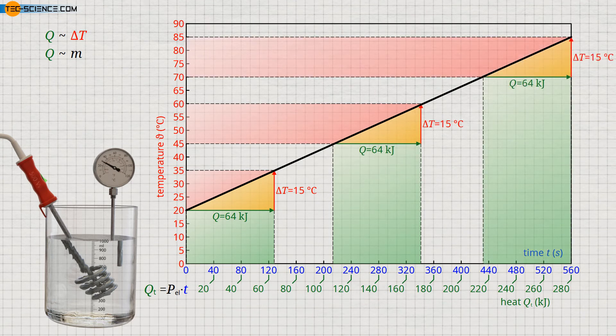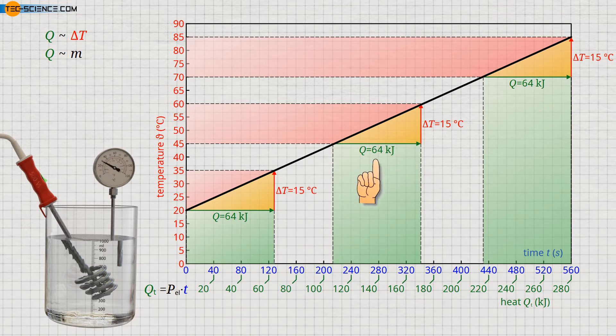Note that at this point we distinguish between the total amount of heat Q_T supplied to the water up to a certain point in time T, and the heat Q supplied within a certain time period, which is responsible for a corresponding temperature change ΔT.